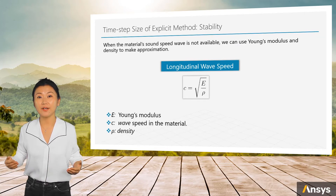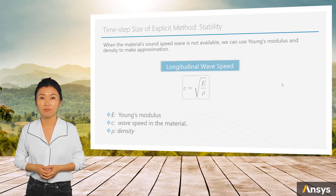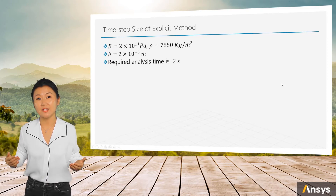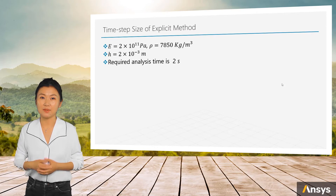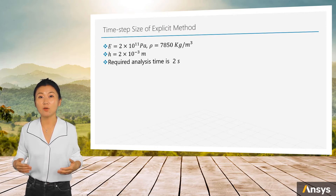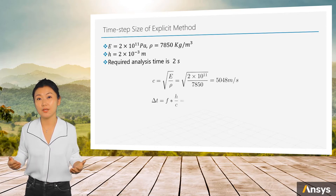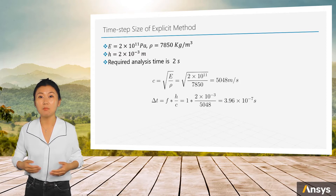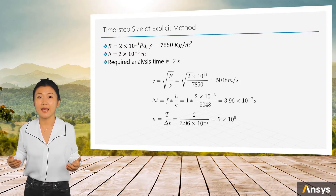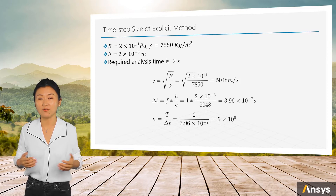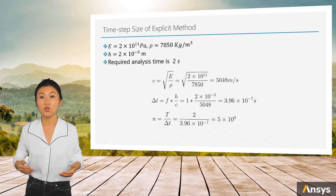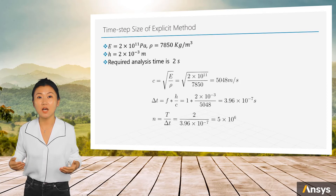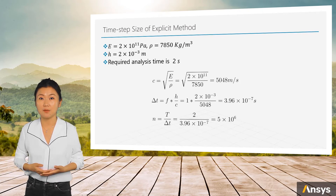Let's try finding an appropriate time step size for a problem. Given Young's modulus E, density rho, and characteristic element size h, the allowable time step size is calculated to be 3.96e-7 seconds. If the total analysis time is 2 seconds, the number of time steps required is at least 5 × 10^6. If the total analysis time is 20 seconds, then 10 times that number of time steps is needed.